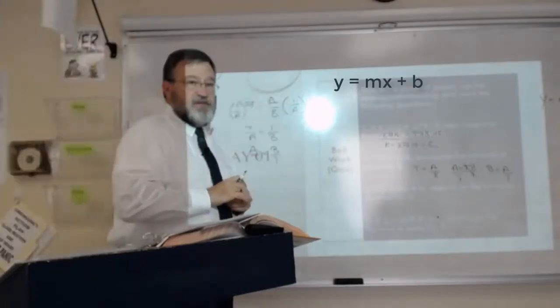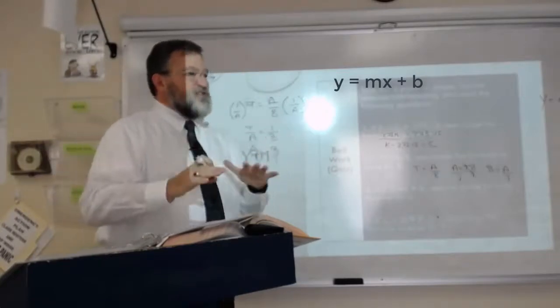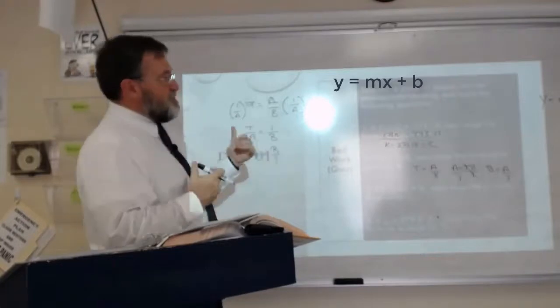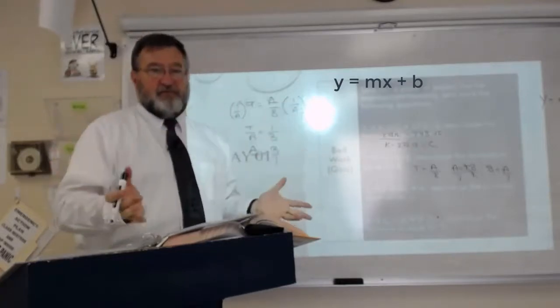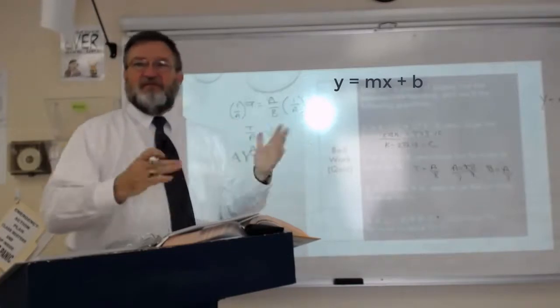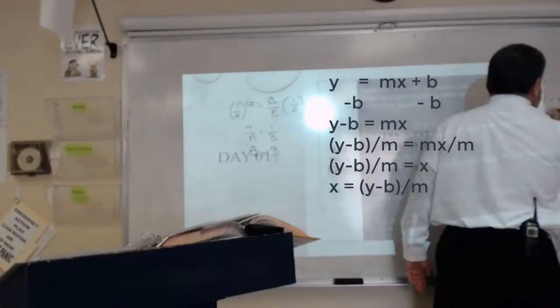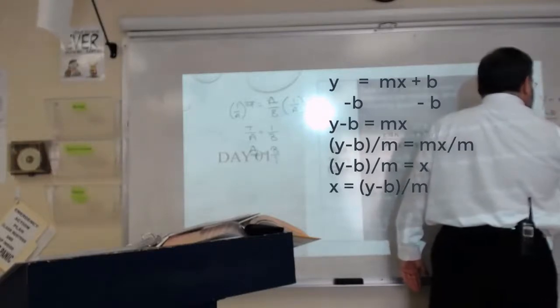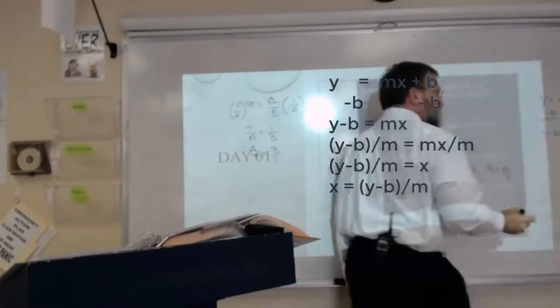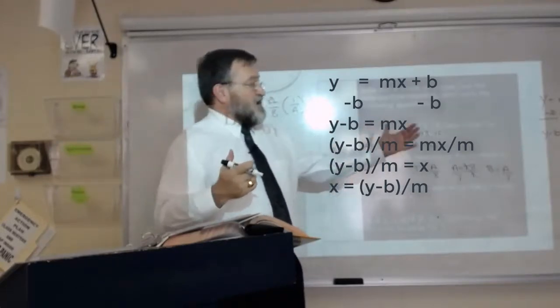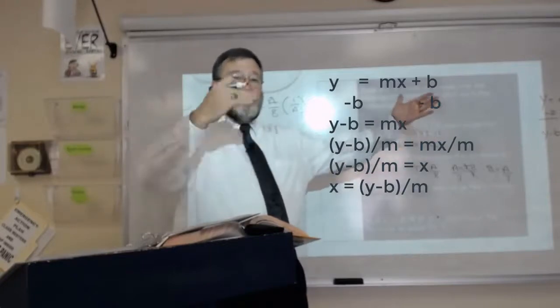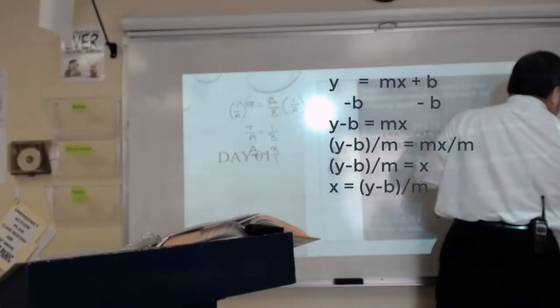Let's go back to Y equals MX plus B. Solving for X - I'm trying to get X all by itself. First I'm going to look for the easy stuff, the low-hanging fruit, the additions and subtractions. Get those out of the way first. Subtract B from both sides: Y minus B equals MX. Then divide both sides by M. X equals Y minus B divided by M.